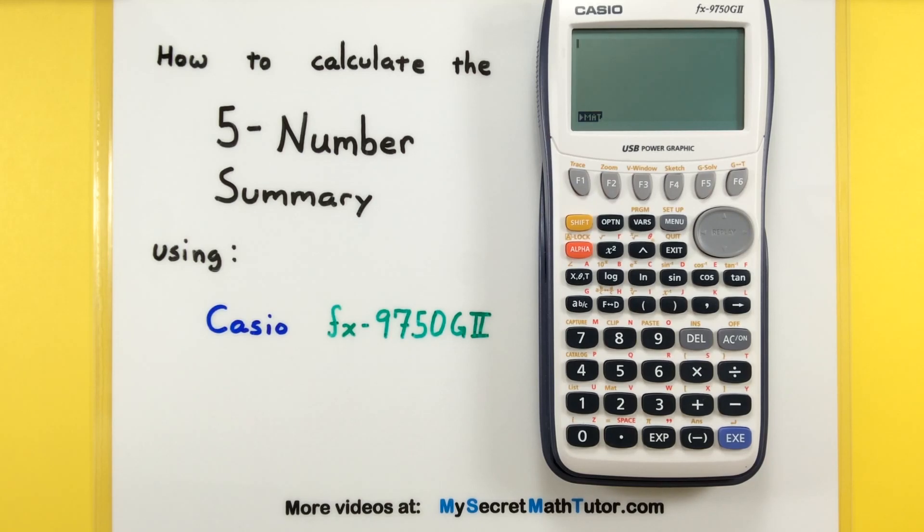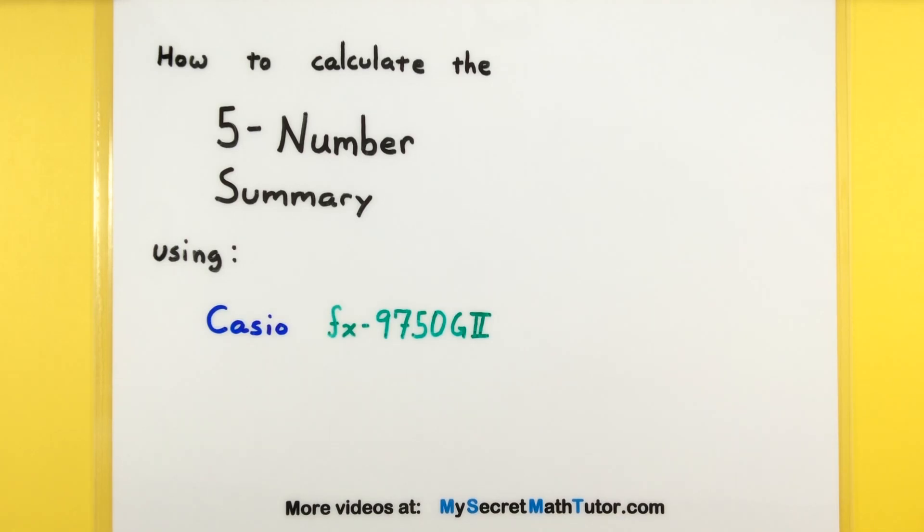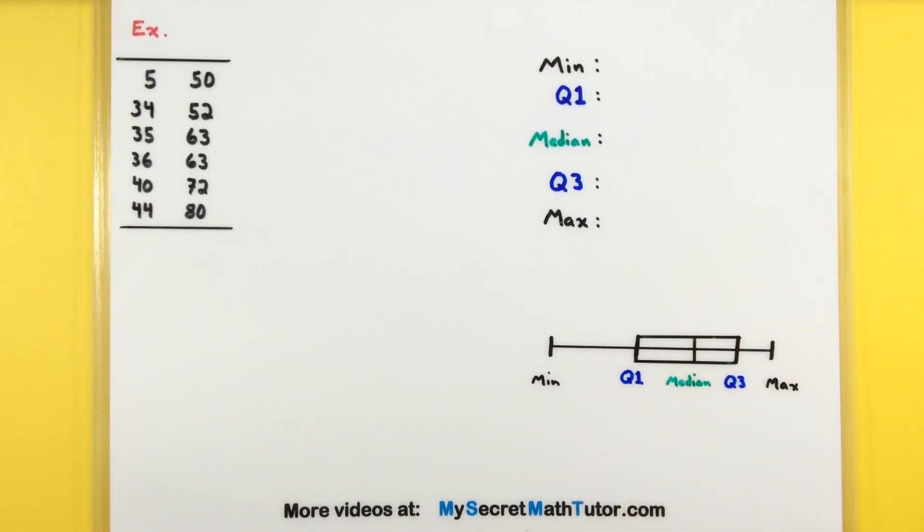Hello and welcome to My Secret Math Tutor. For this video we're going to cover how to do a five-number summary on the Casio FX-9750G2. So this is a great calculator for statistics, but of course it's a little tricky to figure out where exactly all of these different menu options are.